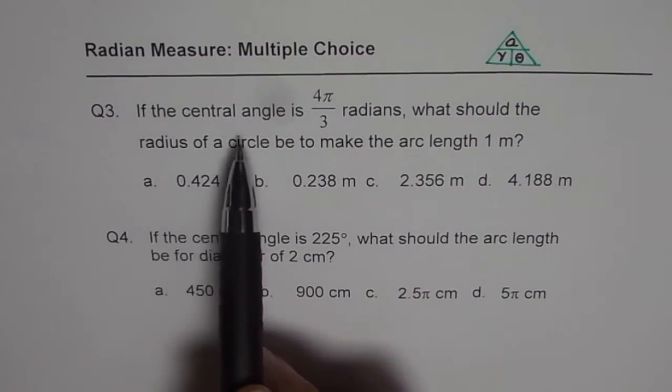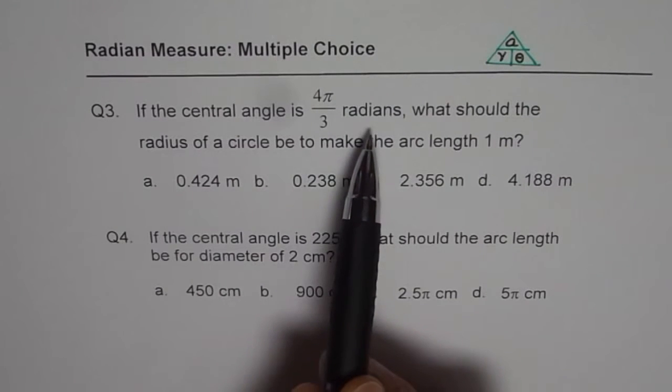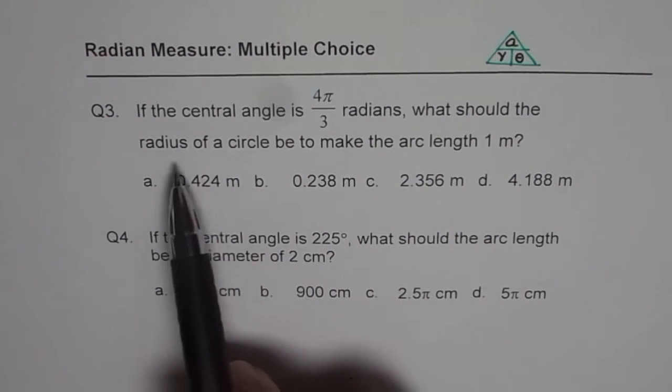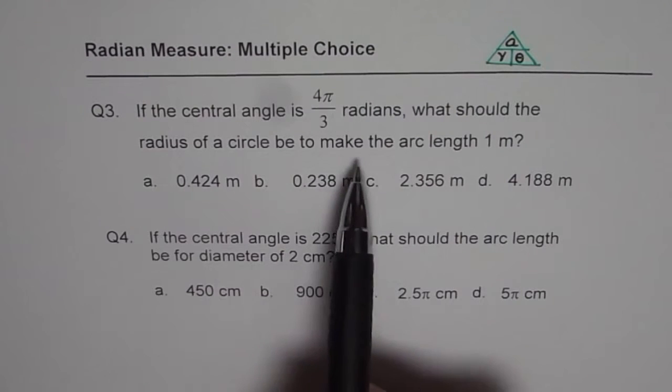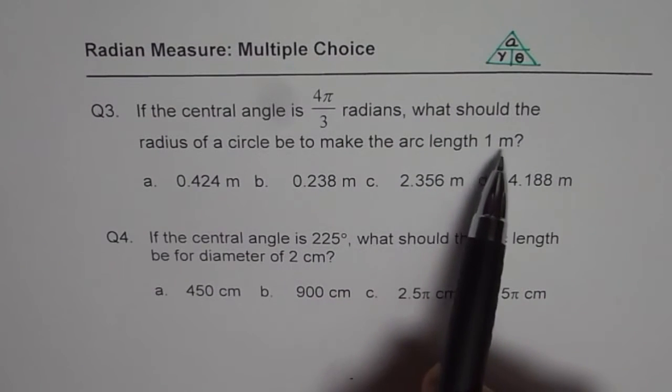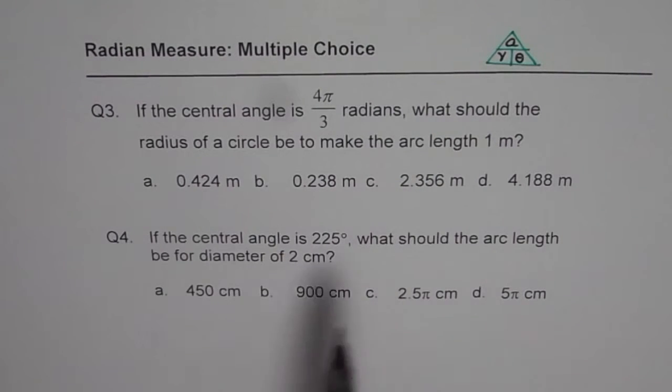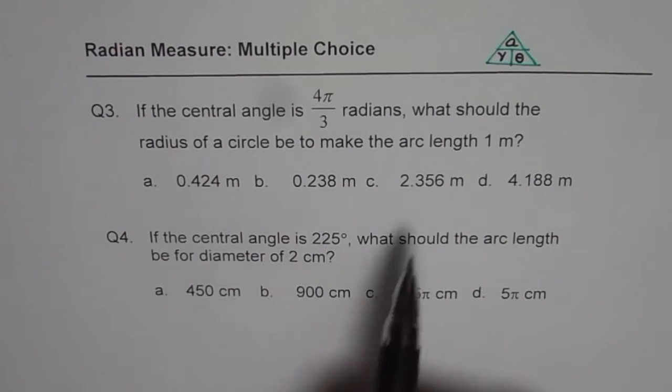If the central angle is 4 pi by 3 radians, what should the radius of a circle be to make the arc length of 1 meter? You may need a calculator and then you can match the answer.